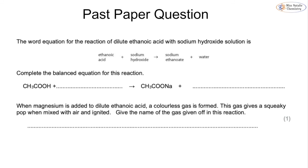For the balanced chemical equation of dilute ethanoic acid reacting with sodium hydroxide: ethanoic acid is CH3COOH, reacting with sodium hydroxide NaOH, forming sodium ethanoate — already given — and water H2O. Checking the balance: two carbons each side, hydrogens give three plus two equals five on each side, oxygens give three on each side, and one sodium each side. No coefficients are needed — this is already a balanced equation.